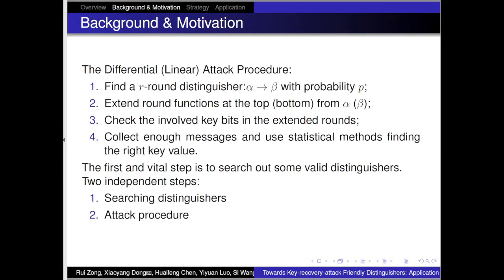During a differential or linear attack procedure, it contains four steps. First, find an R-round distinguisher with input denoted by alpha and output value denoted by beta with probability p. Second, extend the round functions at the top from alpha and at the bottom from beta. Third, check the involved key bits in the extended rounds. Last, collect enough messages and use statistical methods to find the right key value. The first and middle steps — searching a valid distinguisher — are usually regarded as two independent steps.